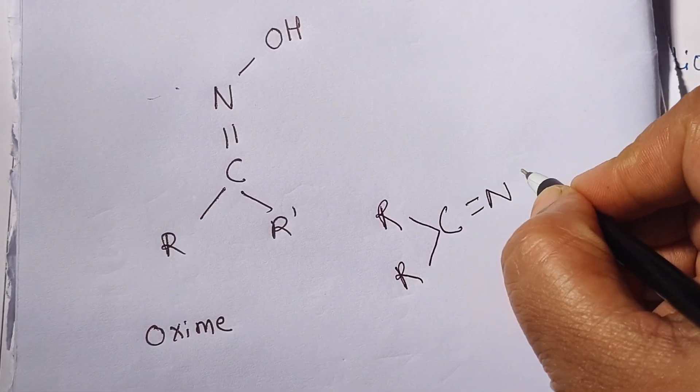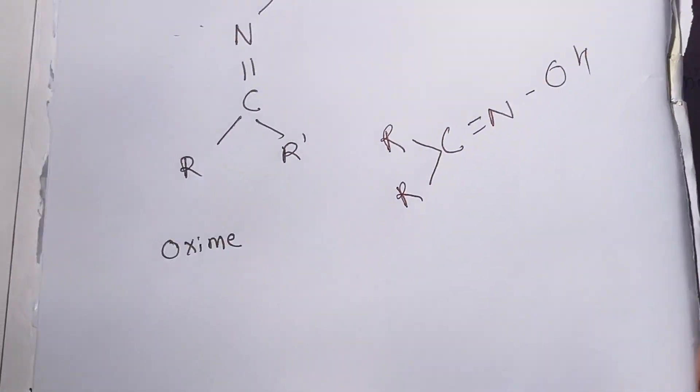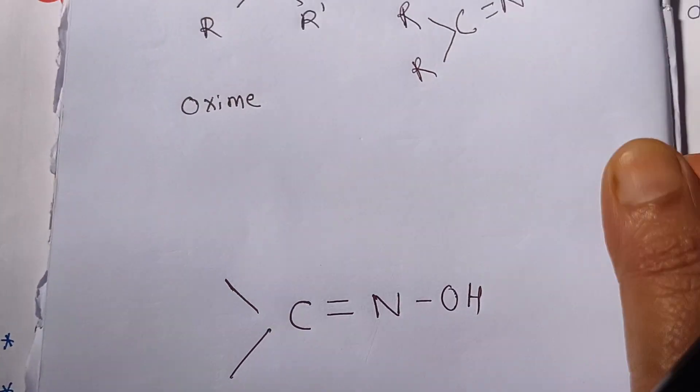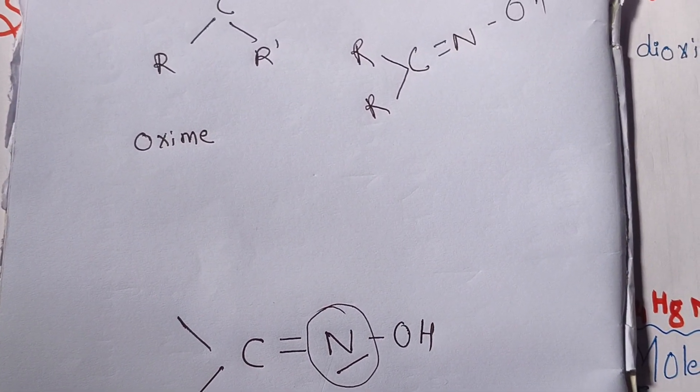Aldehydes or ketones will undergo addition reaction with dimethyl glyoxime by removing the oxygen to add this oxime group. This is the structure of the oxime group. As there is nitrogen, dimethyl glyoxime has two units of oxime groups.